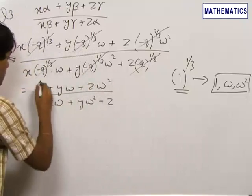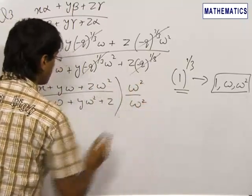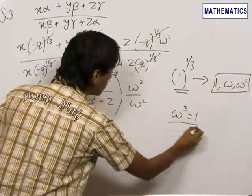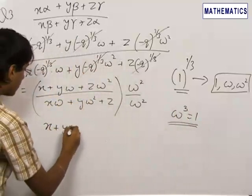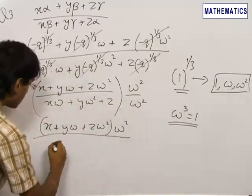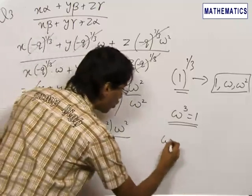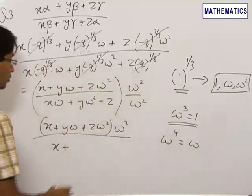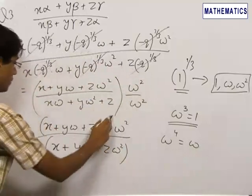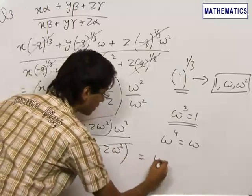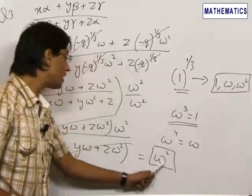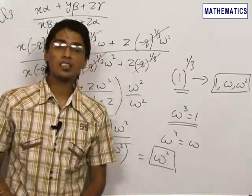Now, if we multiply both the numerator and denominator by omega squared, we get x·omega·omega squared = x·omega cubed = x (since omega cubed = 1), y·omega power 4 = y·omega (since omega cubed = 1), and z·omega squared. We can clearly see that these two expressions are identical, so the terms cancel and we get the final answer as omega squared. Therefore, no matter what the values of x, y and z, the expression equals omega squared, where omega is the cube root of unity.